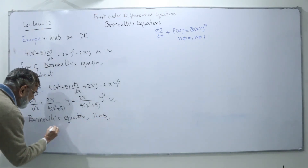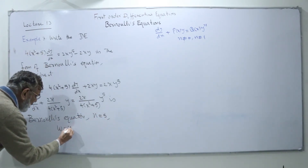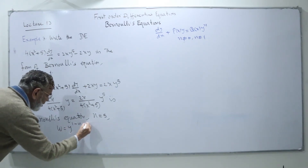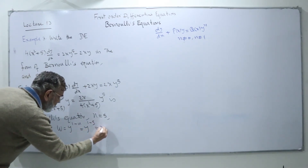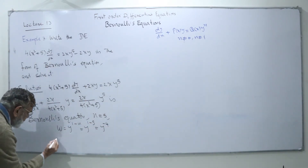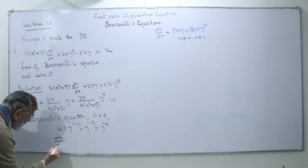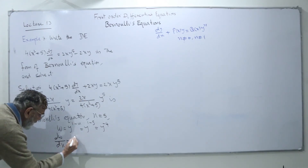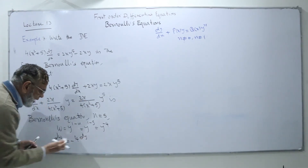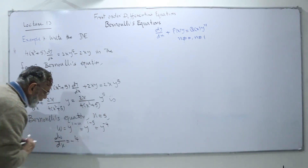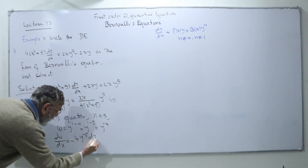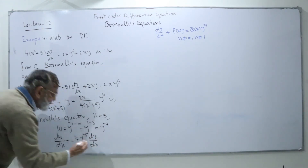We want to make the transformation: w = y^(1−n) = y^(1−5) = y^(−4). Then we find dw/dx, so dw/dx equals minus 4 · y^(−5) · dy/dx.